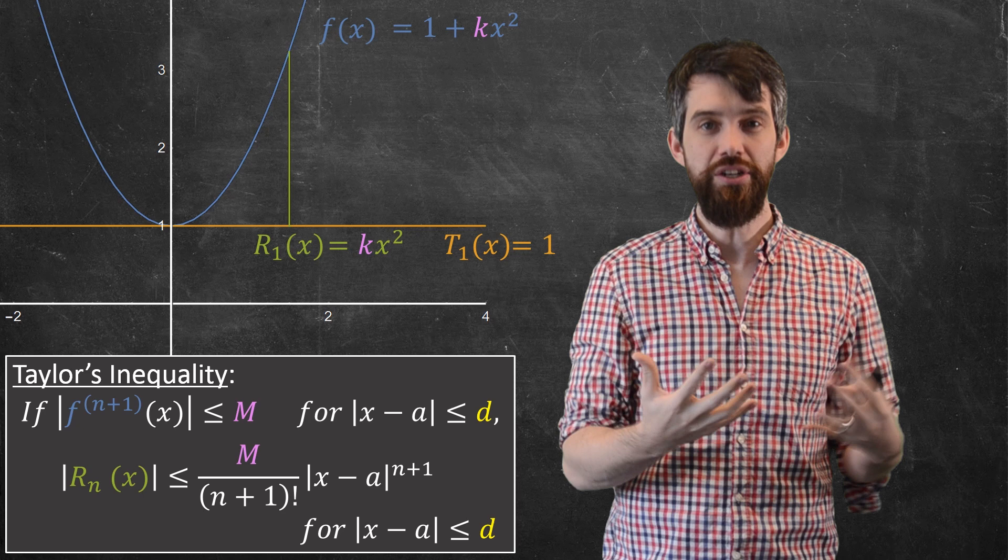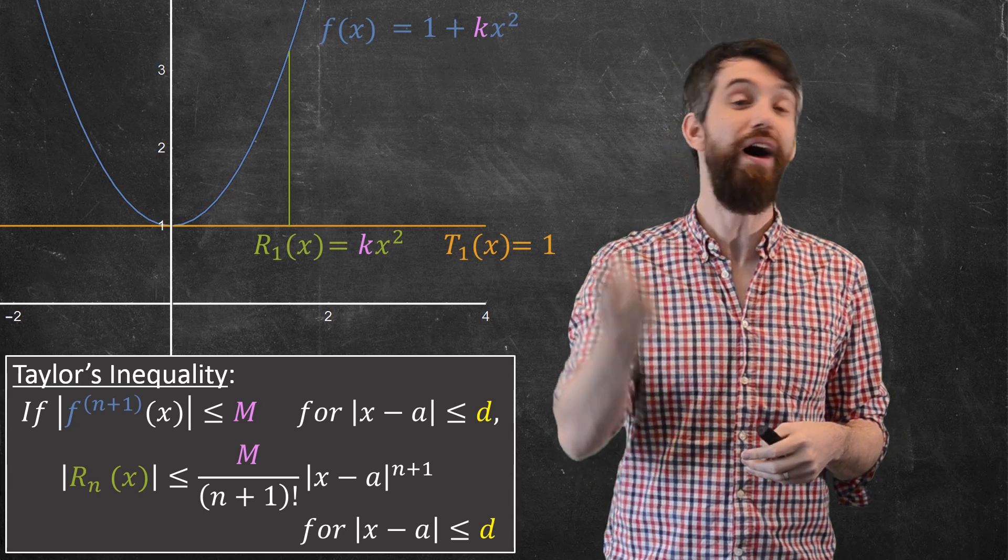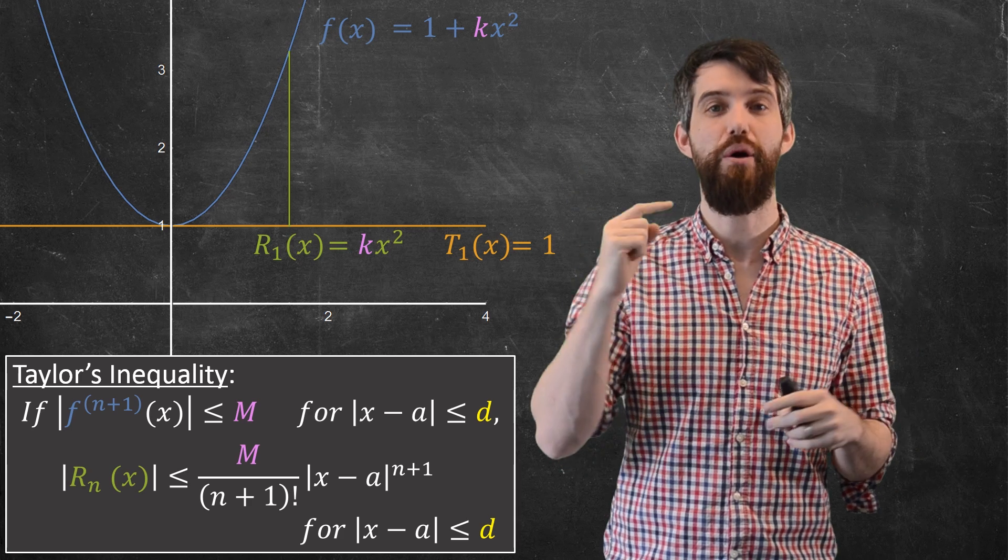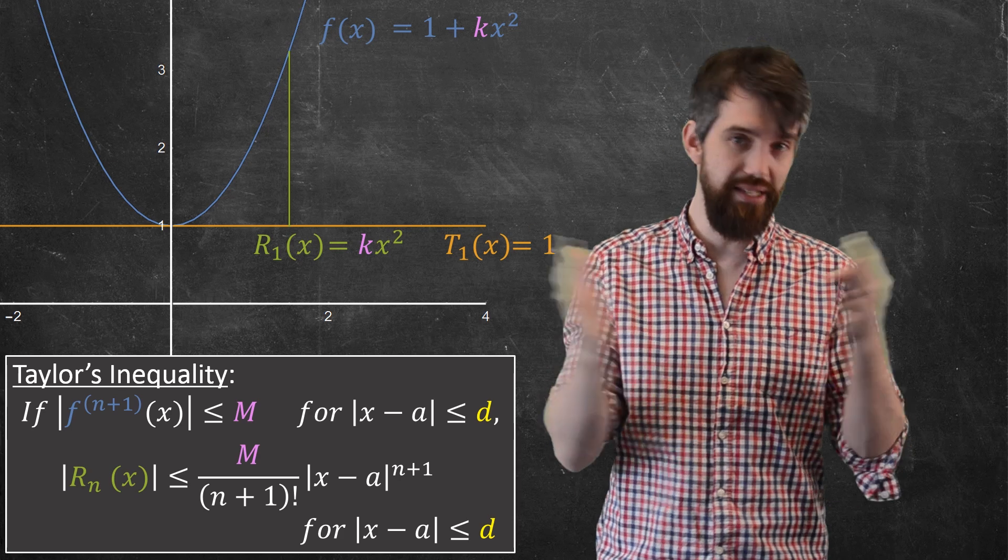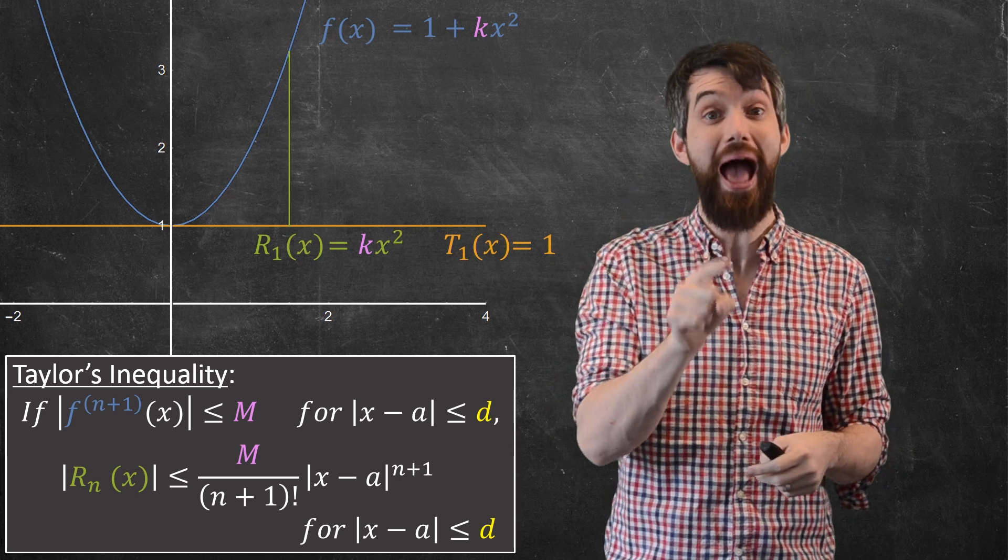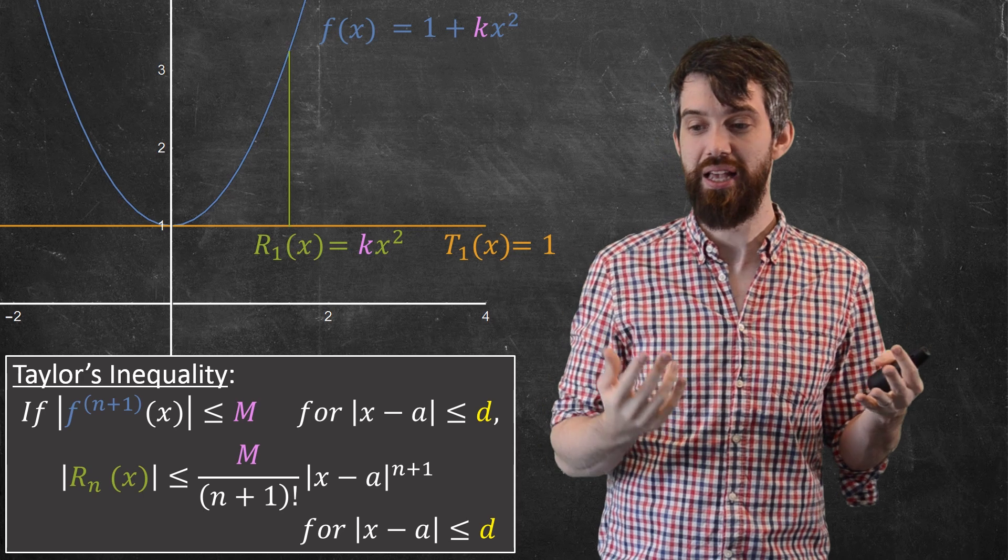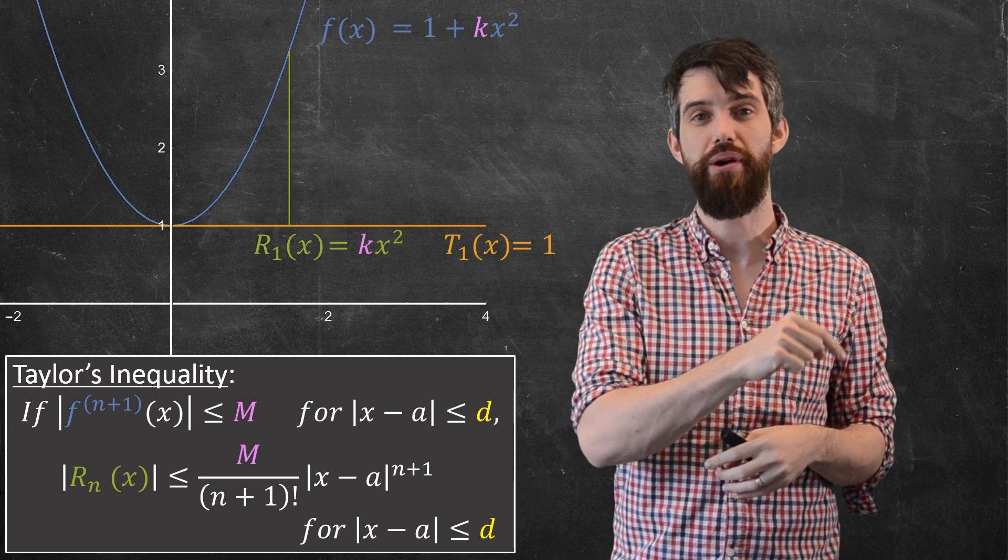Well, the remainder is less than that M that you computed, that bound, divided by (n+1) factorial times the |x - a| to the power of (n+1). And indeed, that's our remainder. So it depends on this distance, the |x - a|, it depends on that bound on the (n+1)th derivative, and it depends on n, as because of the (n+1) on the bottom here, as n gets larger, this remainder is getting smaller and smaller.